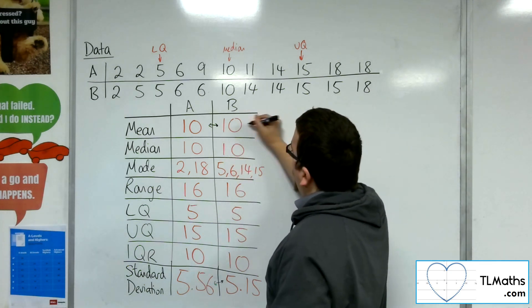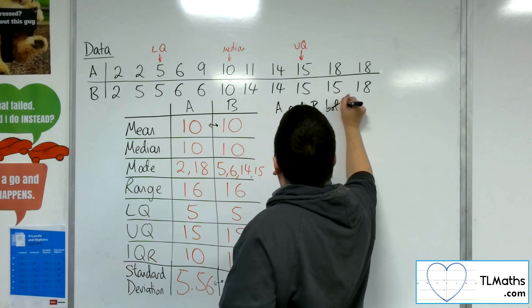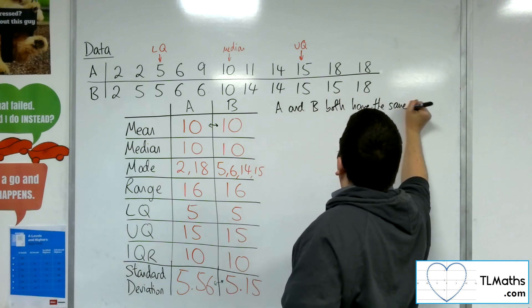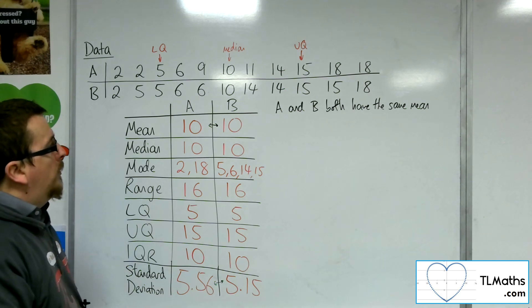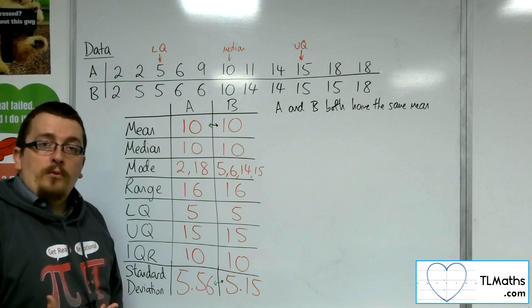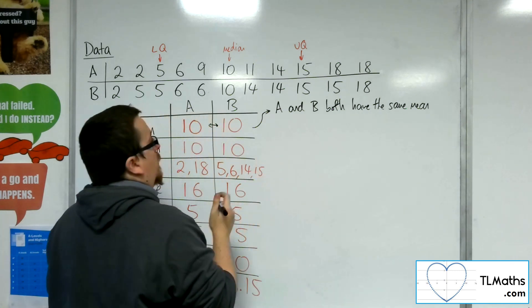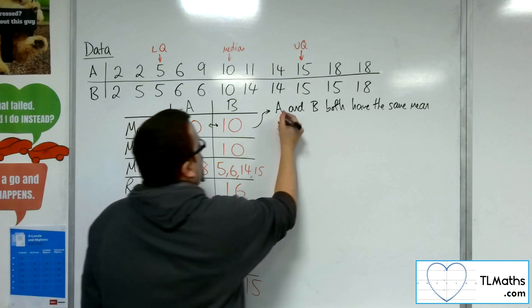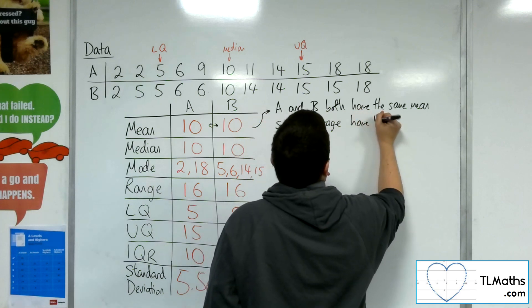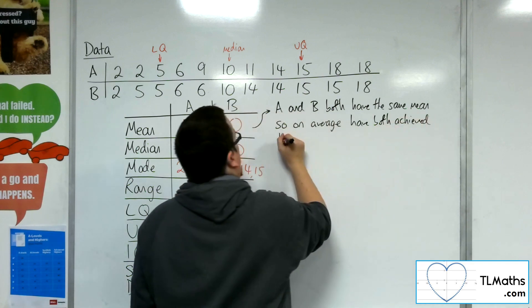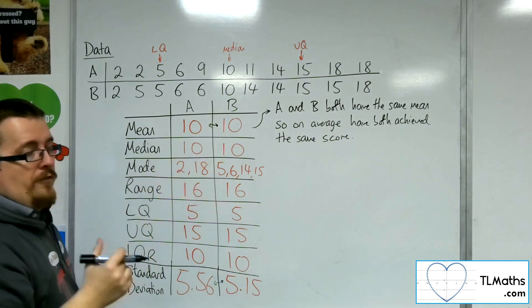So we can say from the fact that A and B both have the same mean, if they were two classes set of scores, then on average, students in one class have done precisely the same as the other. So on average, we've both achieved the same score. Now clearly this problem doesn't have any context to it, so I'm just putting that in for understanding's sake.